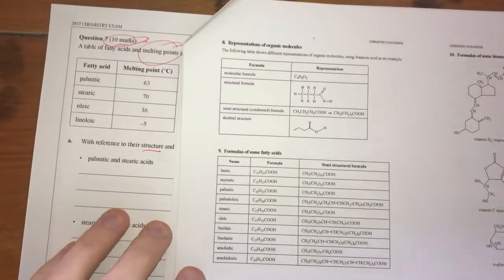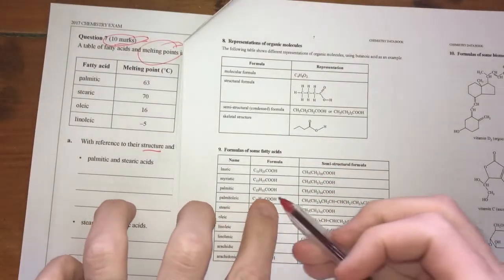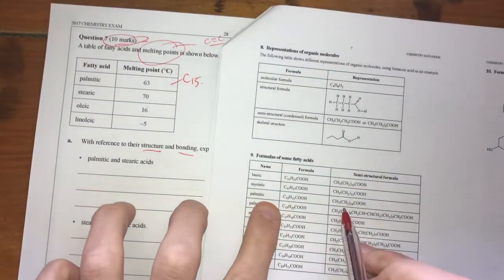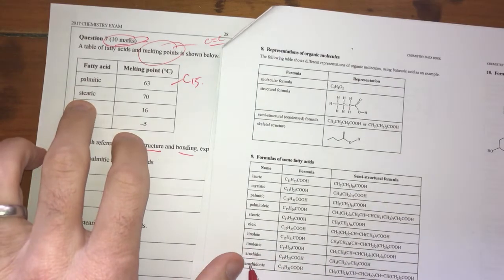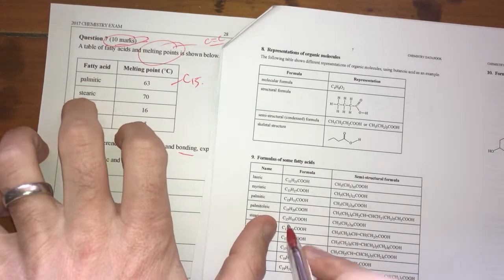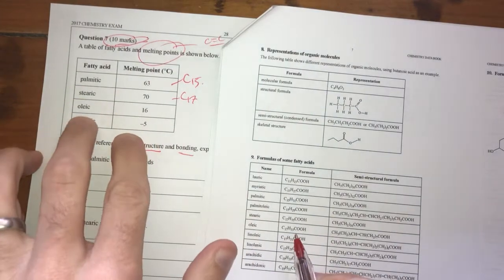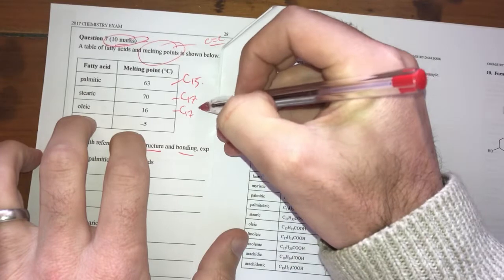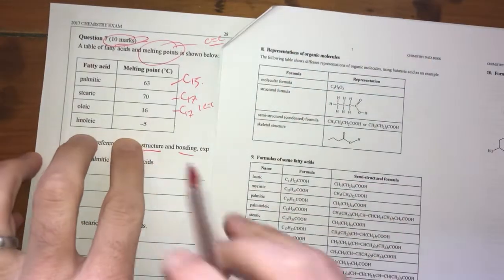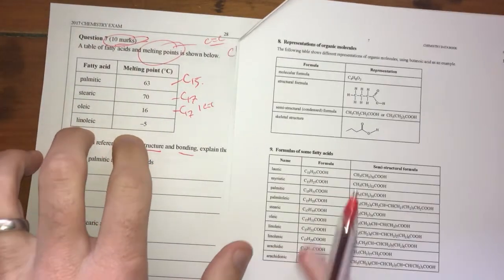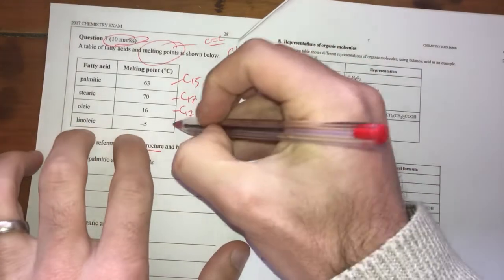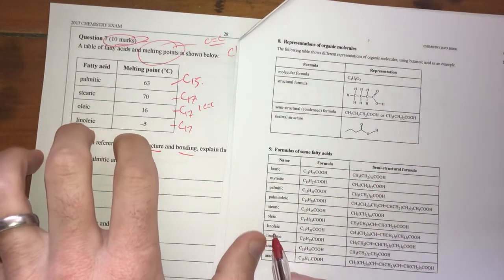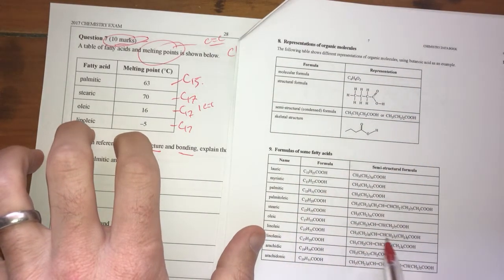So, the first one here is Palmitic. Palmitic acid is a C15 and it has no double bonds. Stearic acid is here, which is a C17 and no double bonds. Oleic acid is a C17 and one C2C bond. And then linoleic acid is C17 and two double bonds.